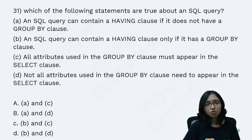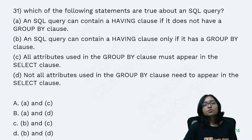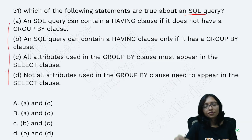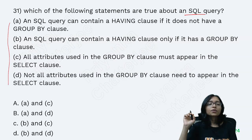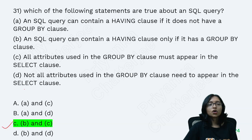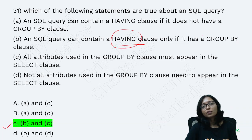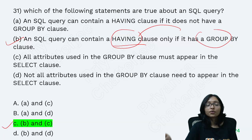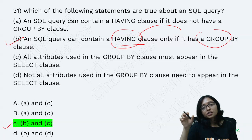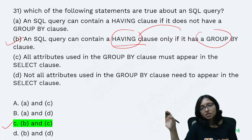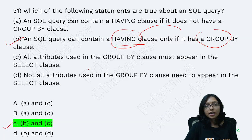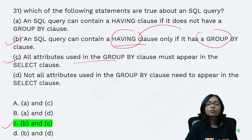This is a conceptual SQL question — you can pause the video to read it. The answer is B and C: whenever you use HAVING, GROUP BY must always be used with it. Also, in the SELECT clause, the attributes present in GROUP BY should be included. Option D is not totally wrong but B and C are most preferable.